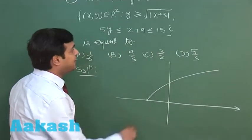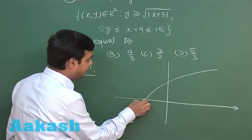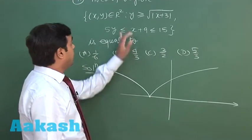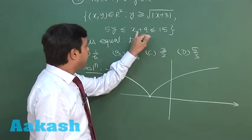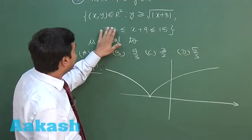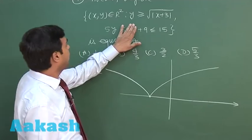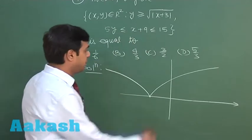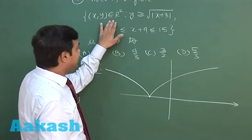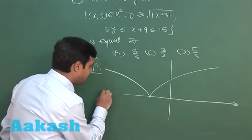When x is less than or equal to minus 3, I can trace it like this. Now when 5y less than or equal to x plus 9, if I consider as the strict equation, so I can see on x equals 0, y is 9 by 5, say here. When y is 0, x is minus 9, say somewhere here.